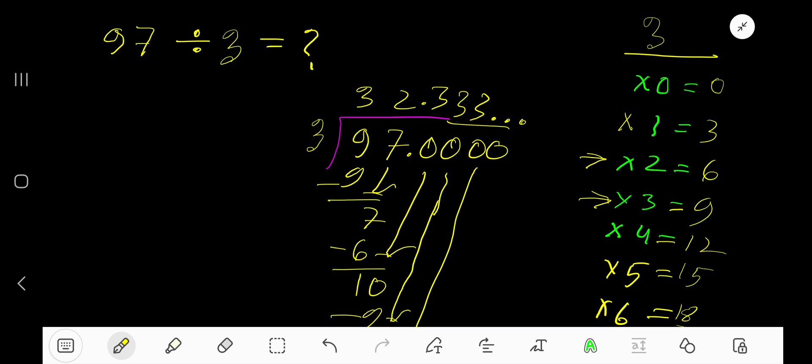We can see the 3 is repeating. You can place a bar over the 3 like this to show it continues repeating. So 32.3 with a bar is our answer.